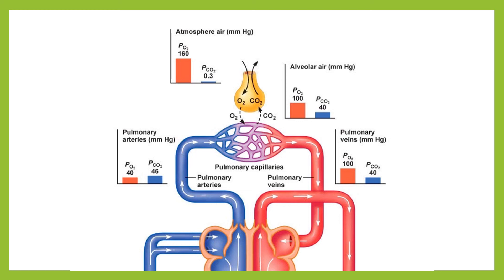One more point about what happens when we are exercising. When we exercise, our muscles are producing greater volumes of carbon dioxide and consuming greater volumes of oxygen. This increases the differentials between the muscle cells and the bloodstream, and when the blood returns to the lungs, the diffusion gradient there is also greater than it would be at rest. So the diffusion gradients during exercise increase substantially, meaning oxygen and carbon dioxide can be exchanged faster during exercise. We'll look at that more in another video.